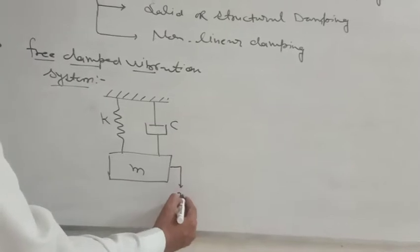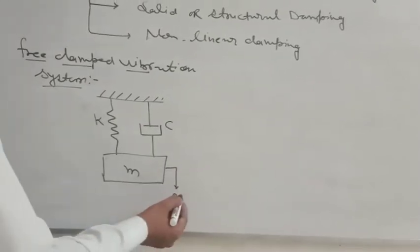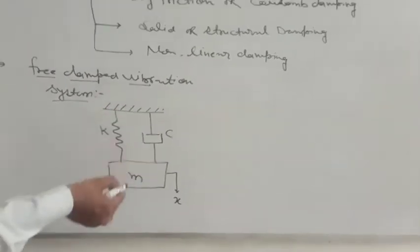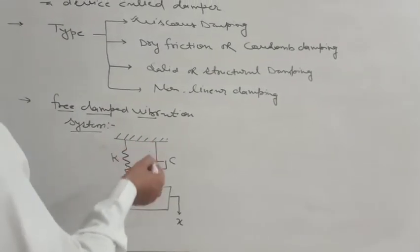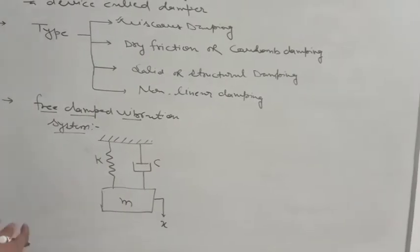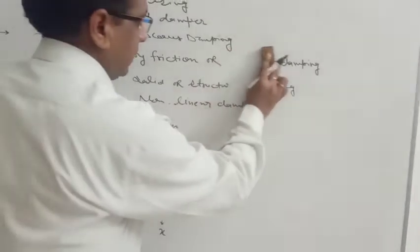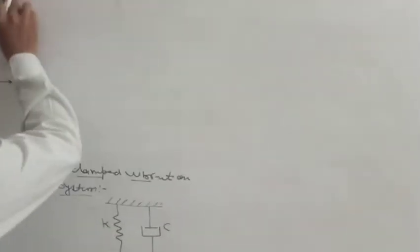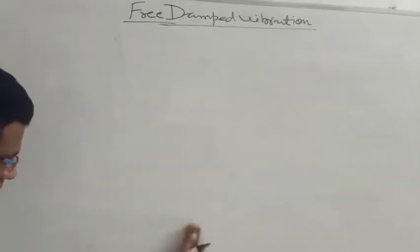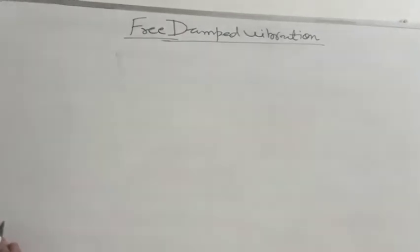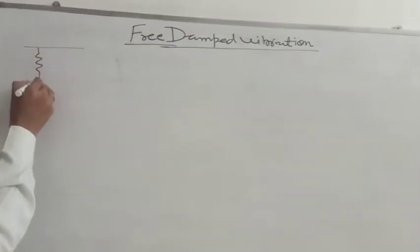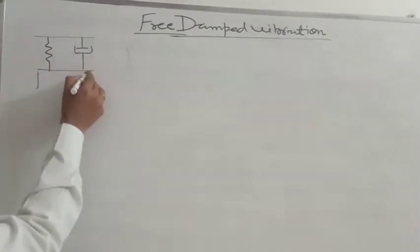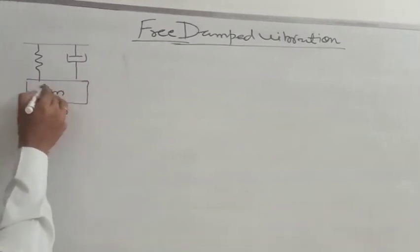If an external excitation is applied and then removed, the system will start to vibrate. For solving this, we use an equation, and for this purpose we first draw a free body diagram.